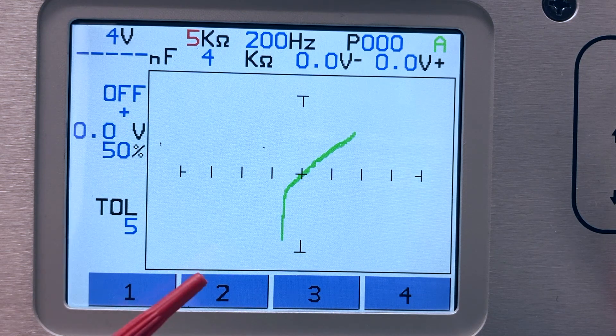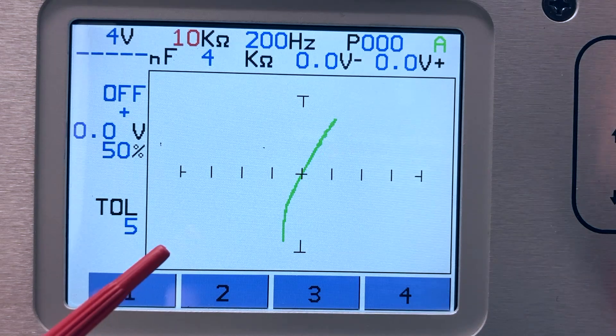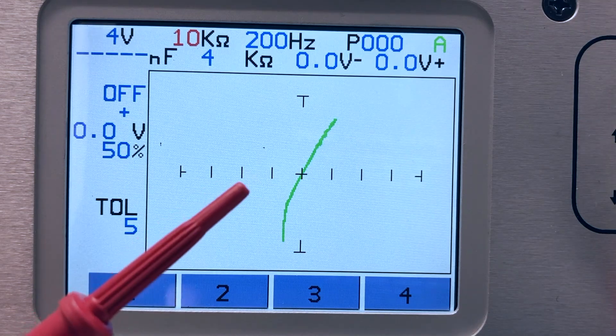You never know how resistive a failure will be, so using a 10k to 50k ohm range will ensure you do not miss high resistance failures.